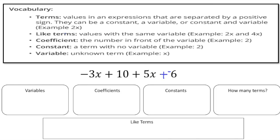So what exactly is a term? So terms are values in expressions that are separated by a positive sign. They can be a constant, a variable, or a constant and a variable. So here we actually have four terms. We have negative 3x, 10, 5x, and then negative 6. So this expression has four terms.